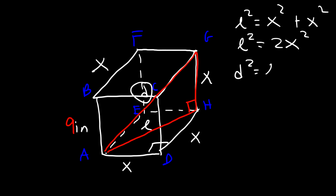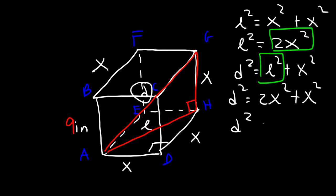So D squared is equal to L squared plus X squared. And then we can replace L squared with 2X squared because they equal each other. So D squared is 2X squared plus X squared, or simply 3X squared.